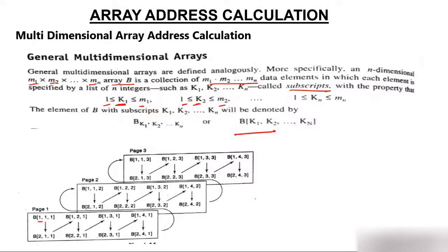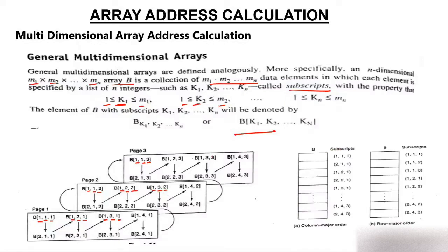In 3 dimensions there is a row, a column, and a page. For example: first page, first row, first column; first page, first row, second column; and so on. The third dimension represents the page, which keeps changing. Whether it's 1, 2, 3, or N dimensions, data is stored either column-wise or row-wise — you've already understood row major and column major order from the 2D video.